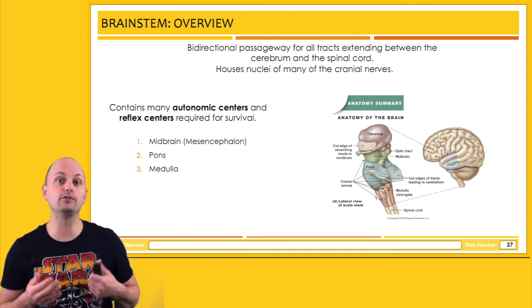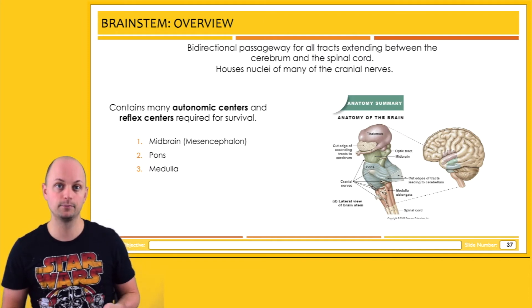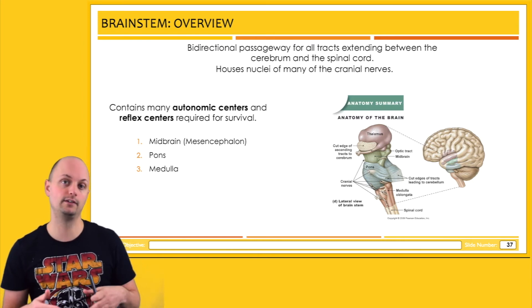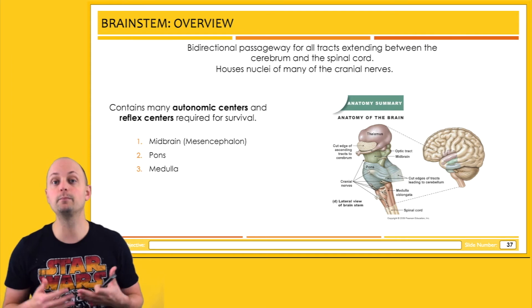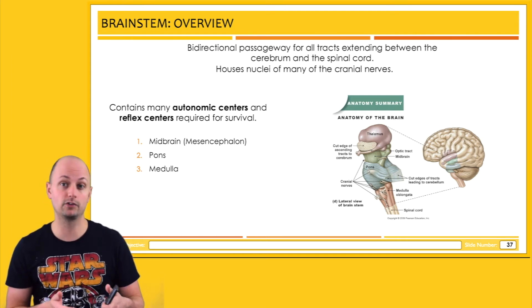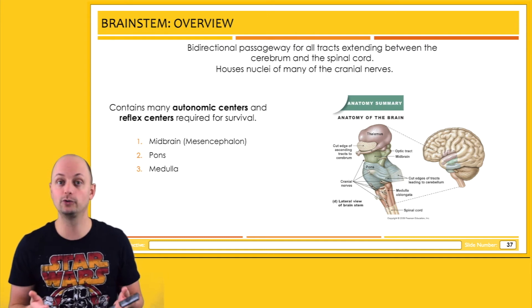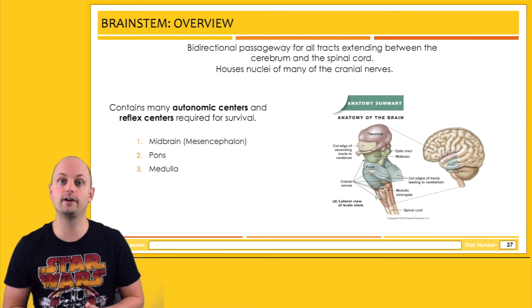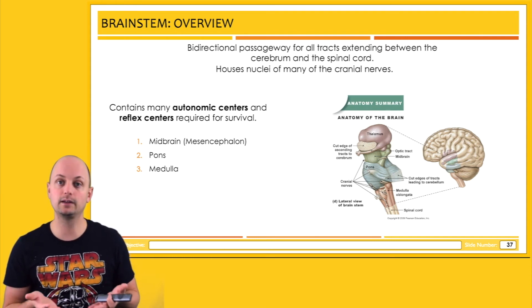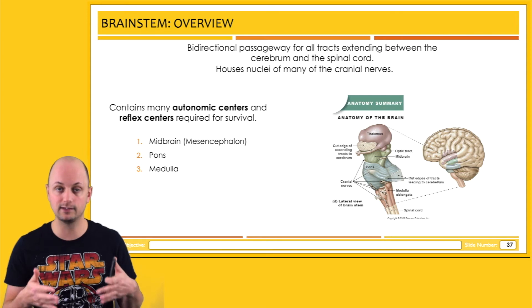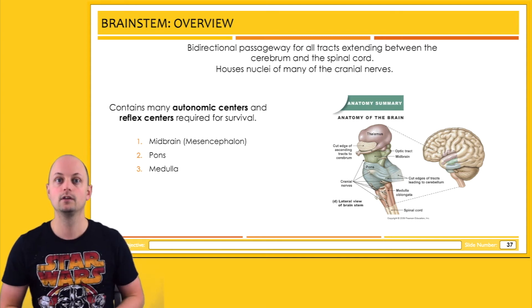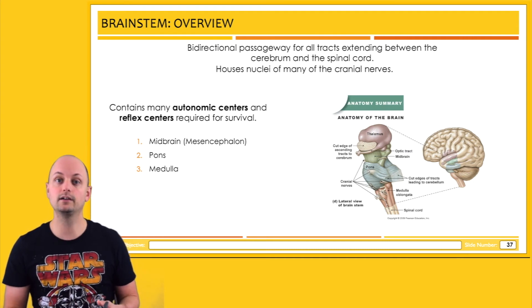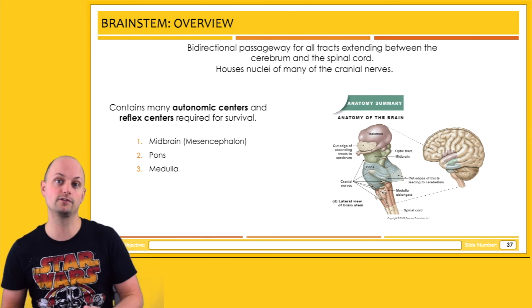The deepest and most inferior part of the brain is the brain stem. This region controls really critical, basic autonomic functions inside the body. People have survived damage to different parts of the cerebral cortex, but it's almost impossible to survive damage to the brain stem, because it impacts functions necessary for survival. For example, the midbrain region is important because some of the cranial nerves originate from this region of the brain stem.